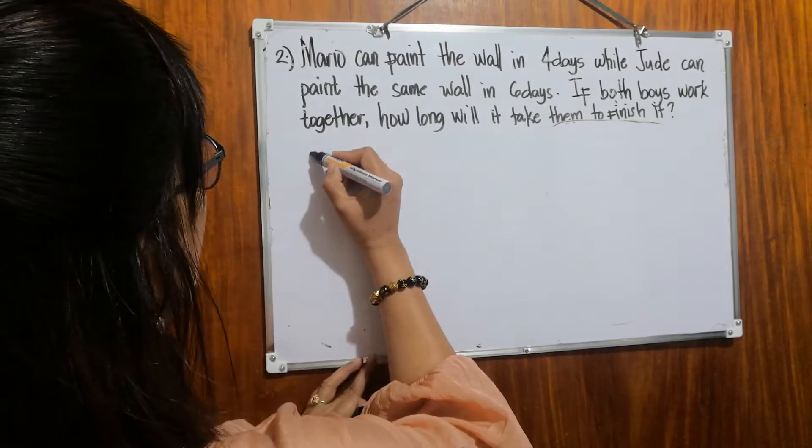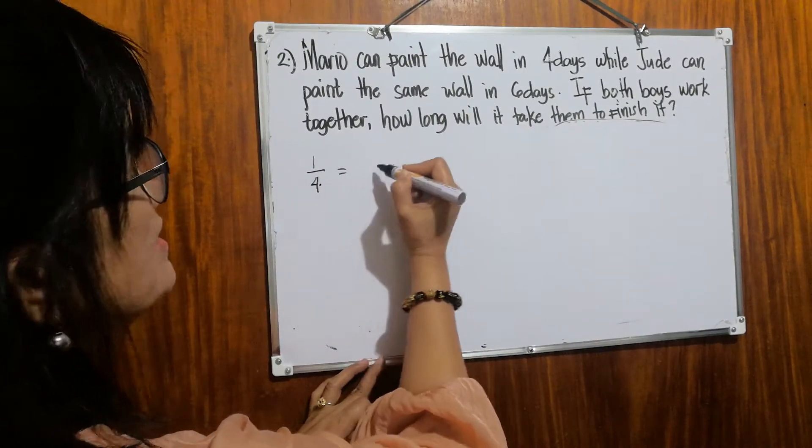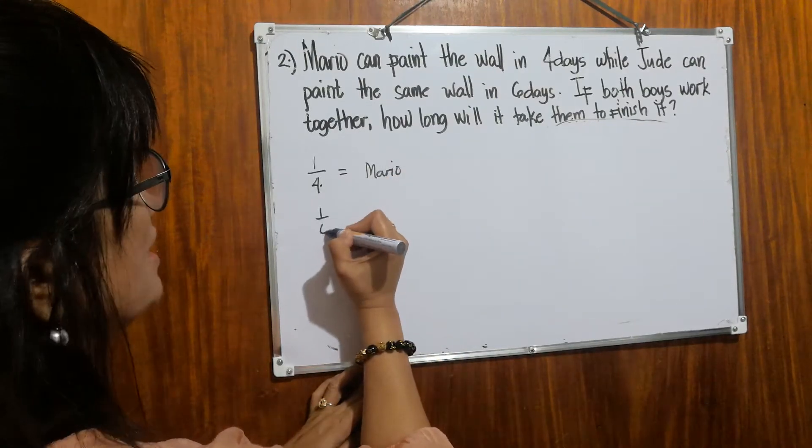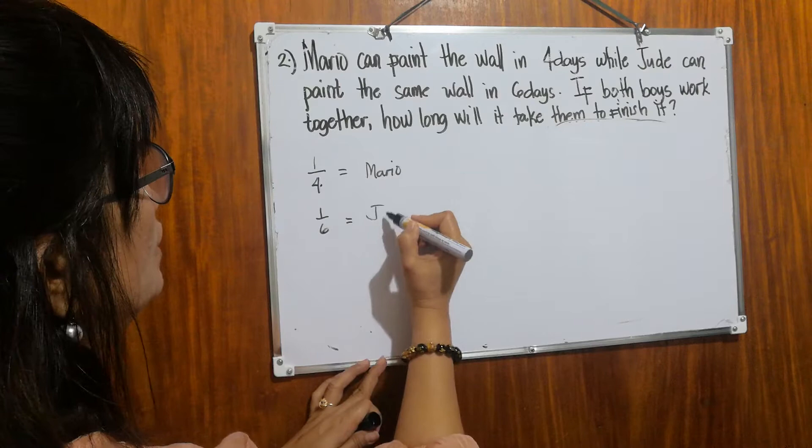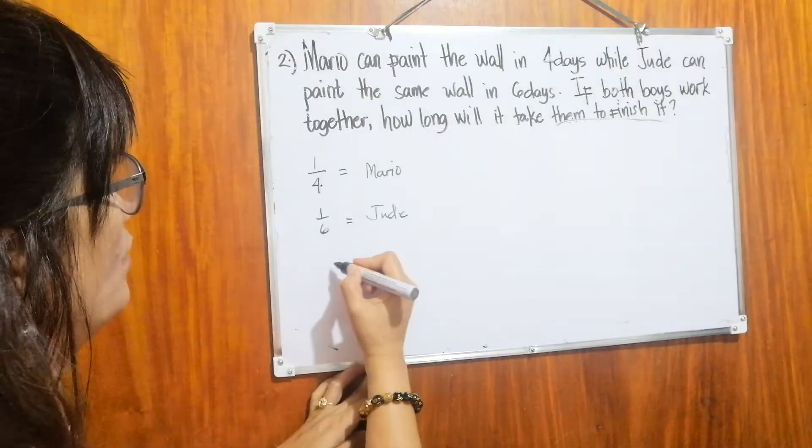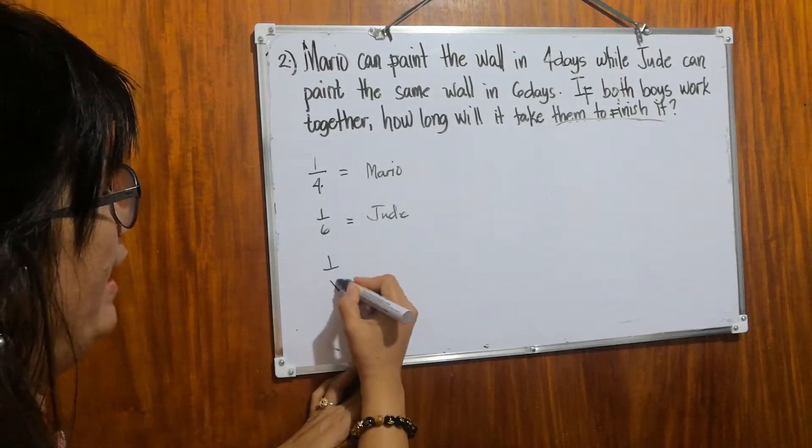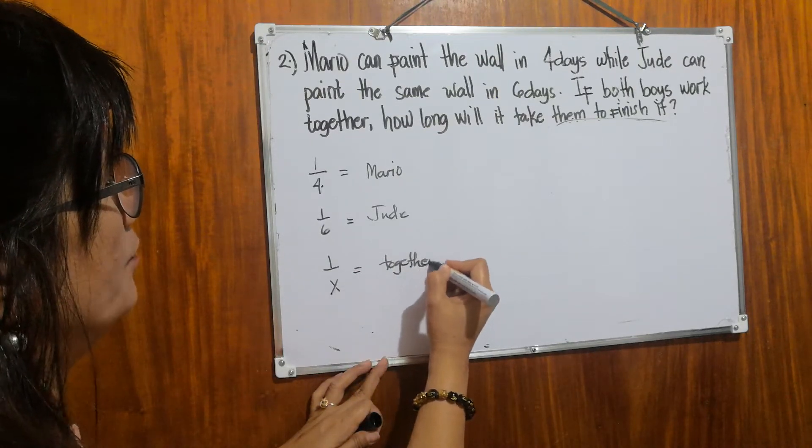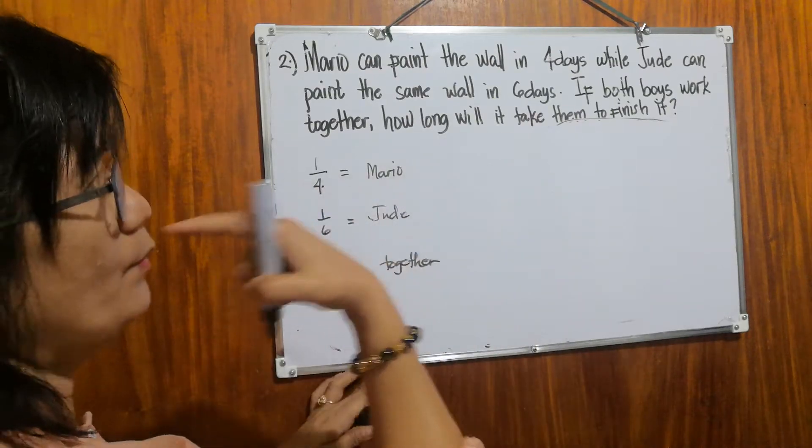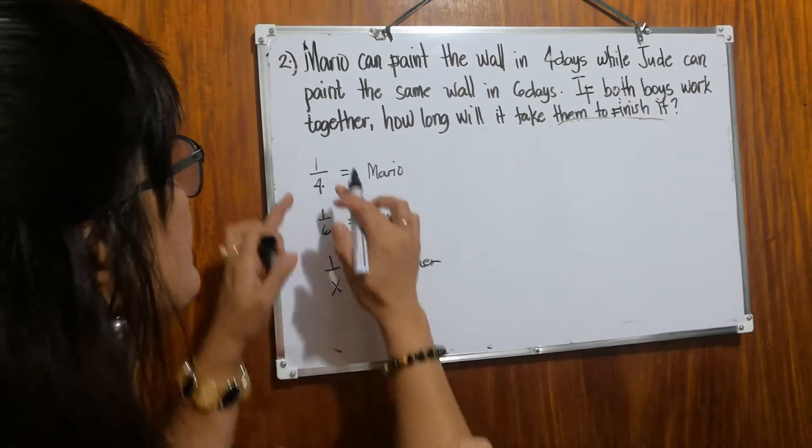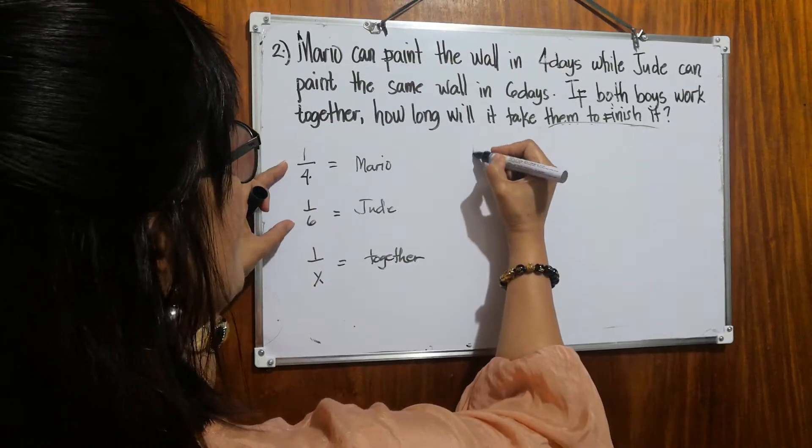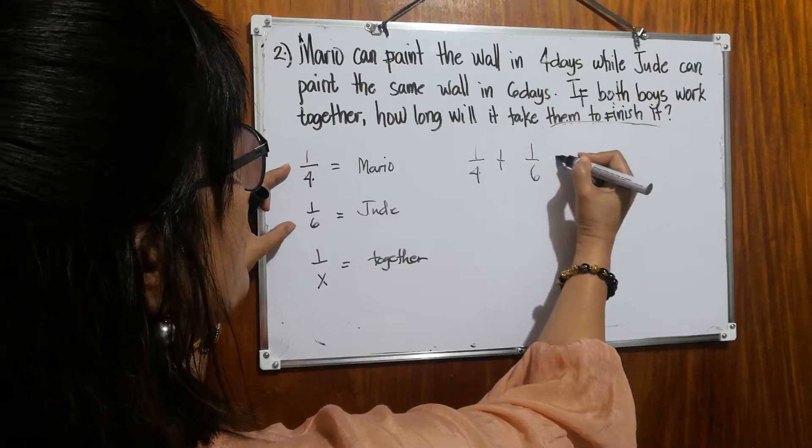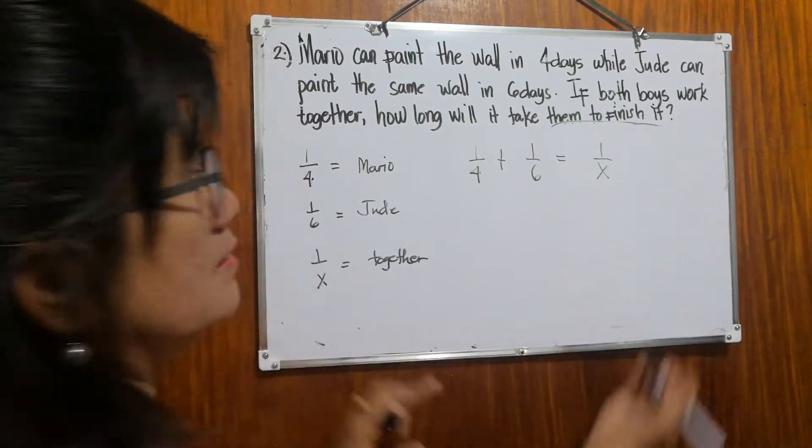So let's translate. One over four, this is the speed of Mario. And one over six for Jude. If they work together, so it will be one over x. When they work together, it will be translated into one-fourth plus one-sixth. The answer is one over x.